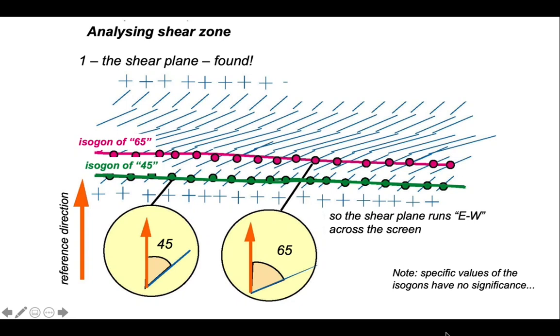Let's just be clear. These values 65 and 45 have no structural significance. Because we've measured these angles relative to an arbitrary reference direction. However, the pattern of isogons is very much of significance. Because these are values of equal orientation of the foliation. Therefore, of equal strain. We get to work out what that strain is, but it's equal strain. These are contours that are parallel to the shear plane. So in this view, our shear plane runs east-west.